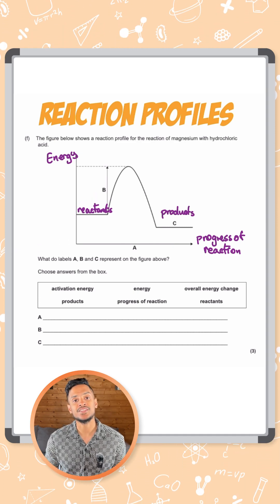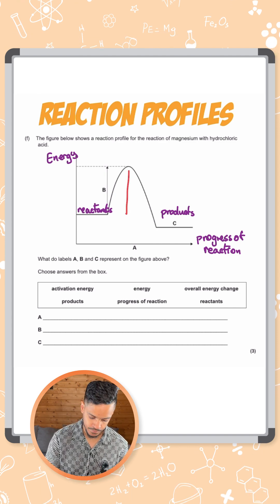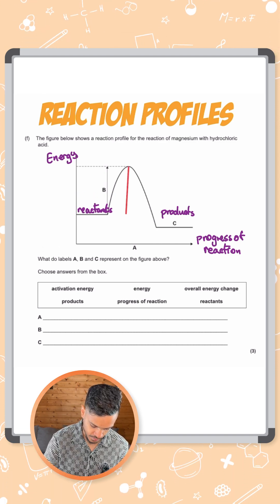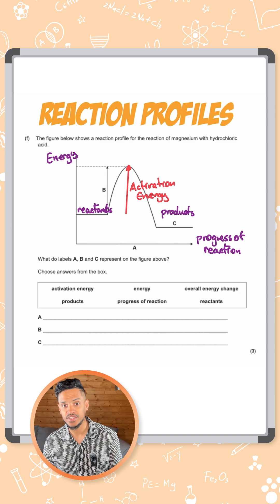Then we've got the distance from the reactants to the peak of the graph. So this is labeled as B in the question. This distance here is the activation energy.